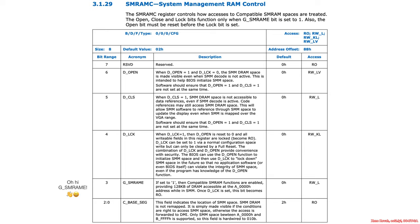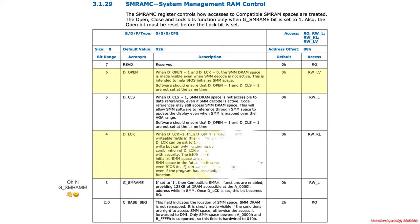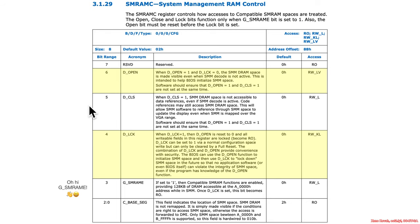Back to SM RAM C, here's our GSRAM E. There are two other bits we care about: the deopen bit, which makes it so that writes to hex 30000 go to RAM instead of video memory, and delock, which is set later to prevent anyone from opening it again. You open it up, write your code in, and lock it so no one else can write there. There is also a declosed bit, but we can mostly ignore that — it only matters if SM RAM itself wants to write to video memory.